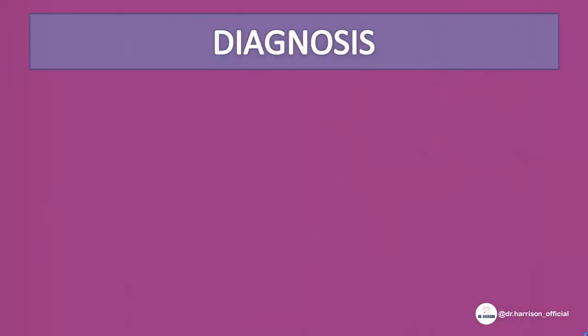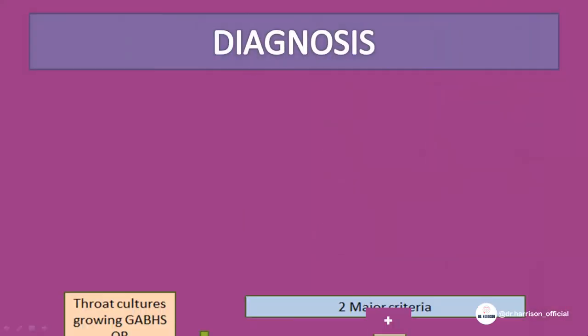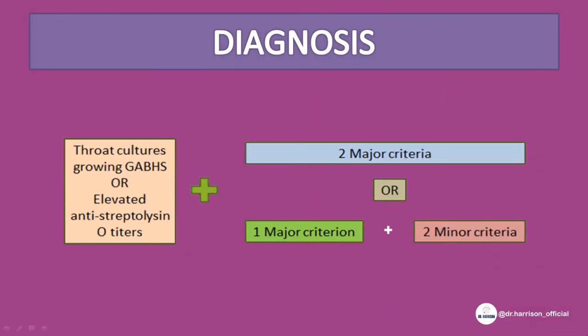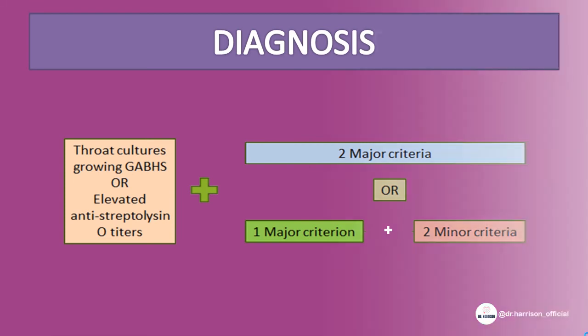Diagnosis of RHD requires a positive ASO titer with two major criteria, or one major criterion and two minor criteria. Now let's see how to treat RHD at different levels.